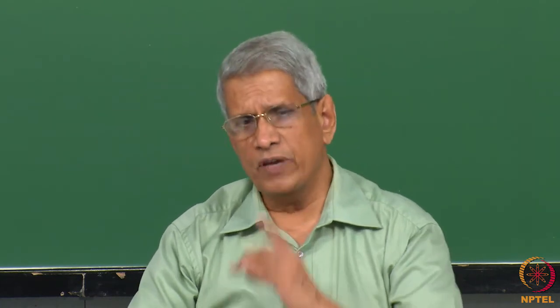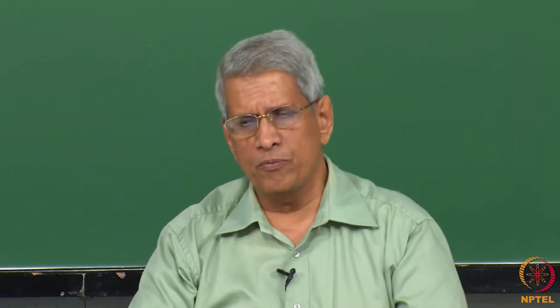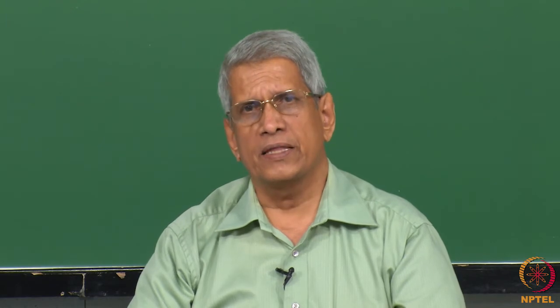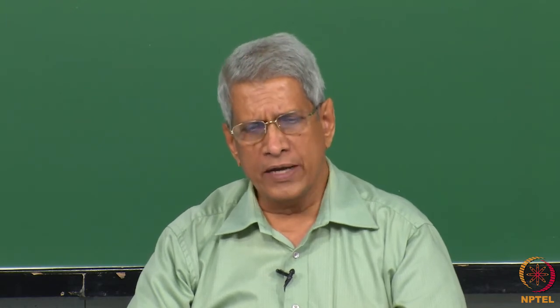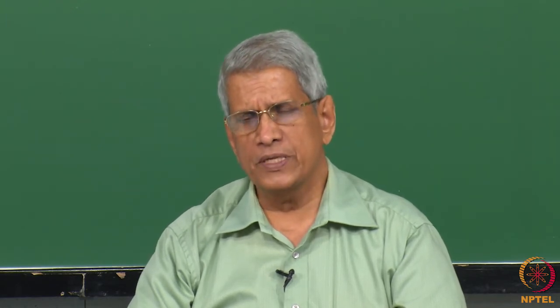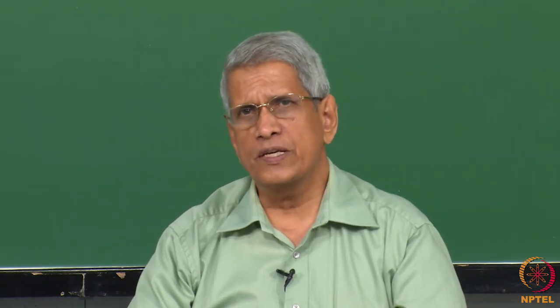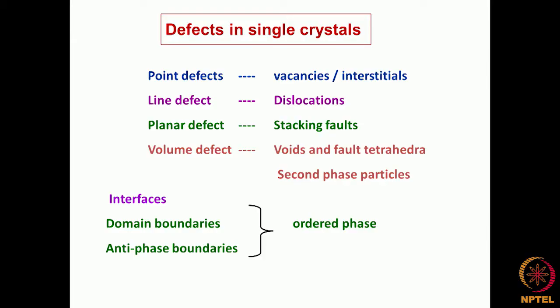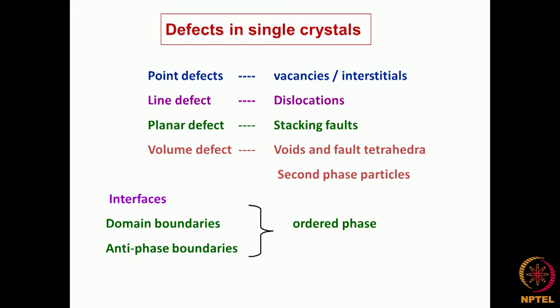The possible interfaces are: one, domain boundaries; another, anti-phase domain boundaries. These are all defects which are present in ordered phases. What are these types of defects? This I will come to later during the course of the other lectures.